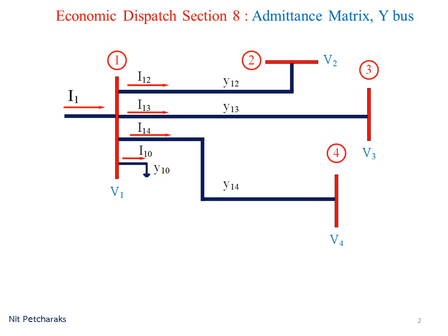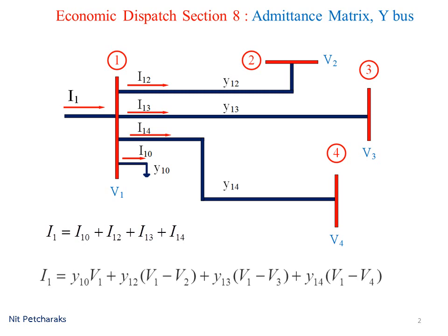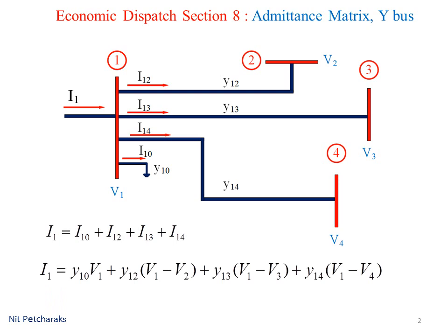To calculate the current in a transmission line linking between buses, for example, we can calculate it from the multiplication term of Y12 with the voltage difference of V1 and V2. Then we will replace all flowing out current with the multiplication term of admittance and the voltage difference.